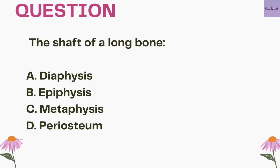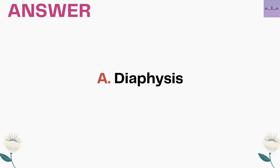Next question: the shaft of a long bone — A. Diaphysis, B. Epiphysis, C. Metaphysis, and D. Periosteum. The tubular shaft of a long bone is known as Diaphysis. The answer is option A, Diaphysis.